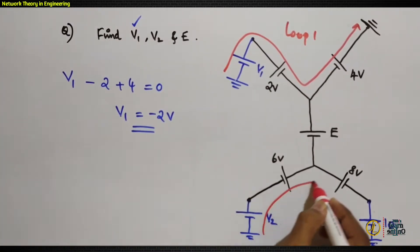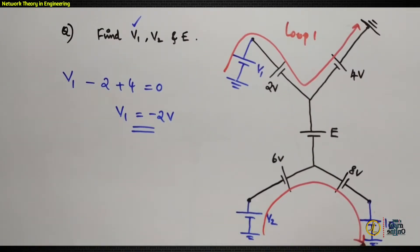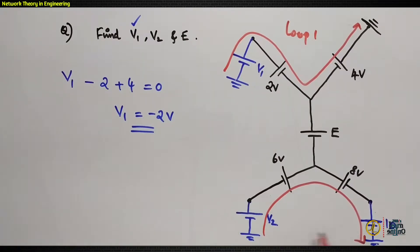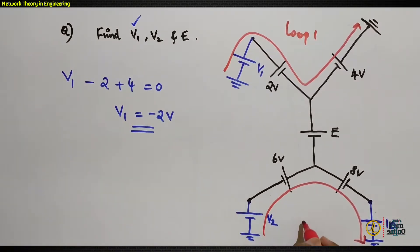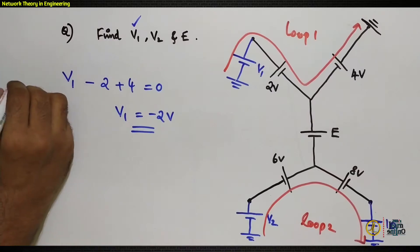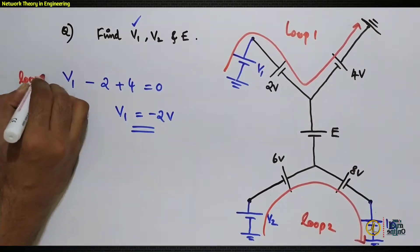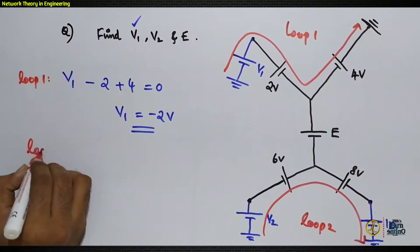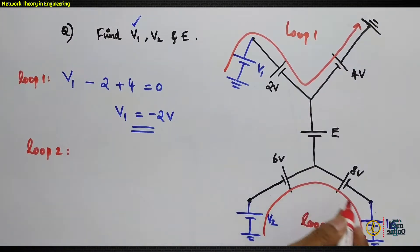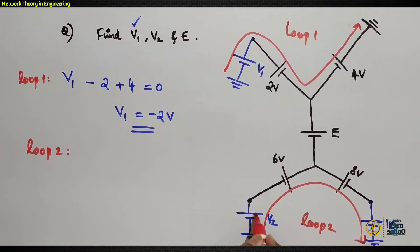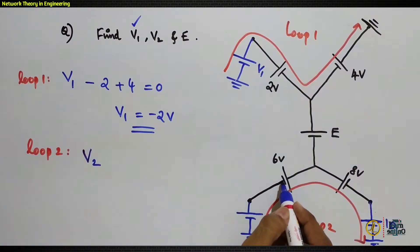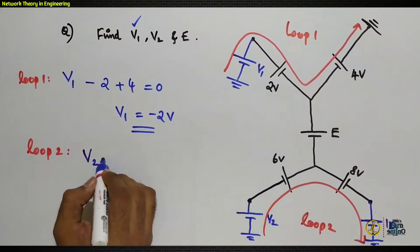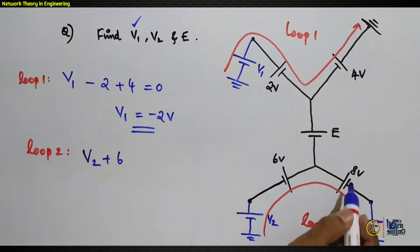For Loop 2, take the loop starting from one ground and ending at another — since both grounds are common, this is a closed loop. Applying KVL: v2 is minus to plus, so take it as +v2. Then 6V is also minus to plus, so take it as +6.